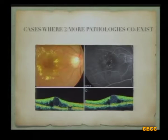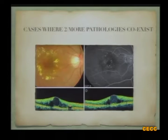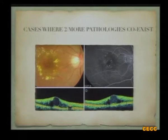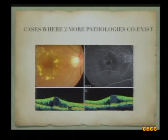Look at this patient who has a circinate hard exudate ring centered on the fovea with some vascular pathology — it looks like a classical case of diabetic macular edema. But on angiogram, you can see dilatation of the perifoveal capillary network, small lesions, and staining microaneurysms. He has both diabetic macular edema and idiopathic perifoveal telangiectasia.